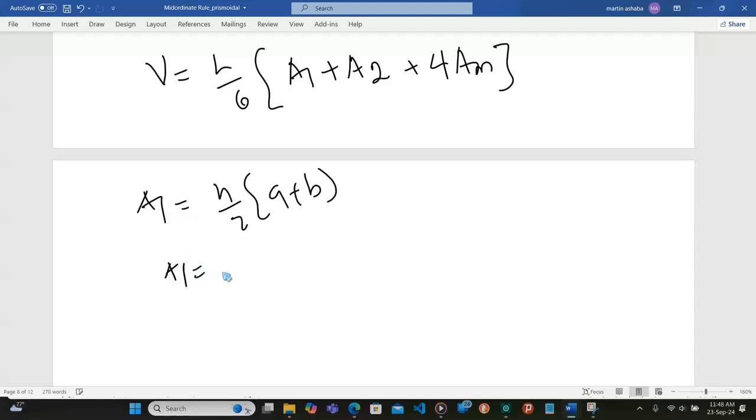So A1 is going to be H, which is 7, divided by 2, into 0.75, which is the top, plus B at the bottom, which is 4.75. And this is going to give us 19.25 square meters.